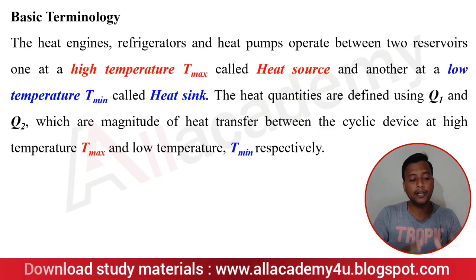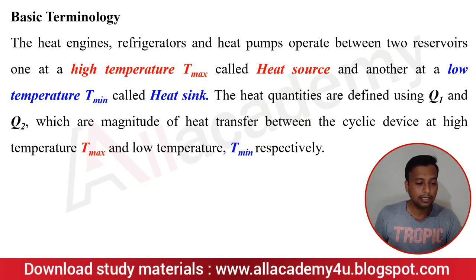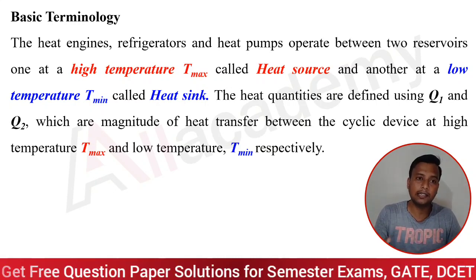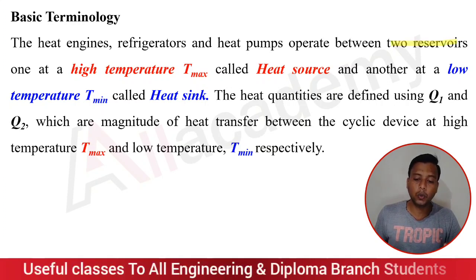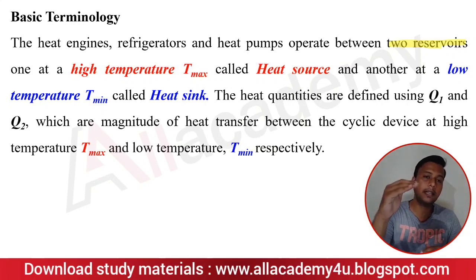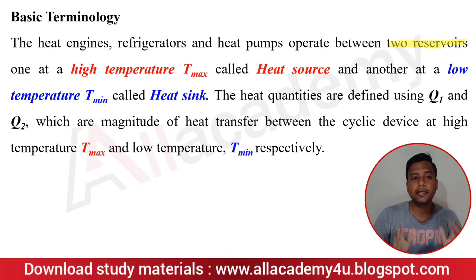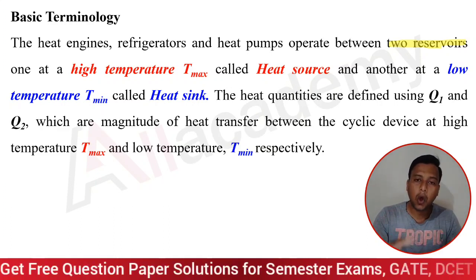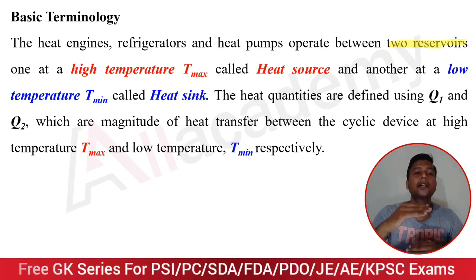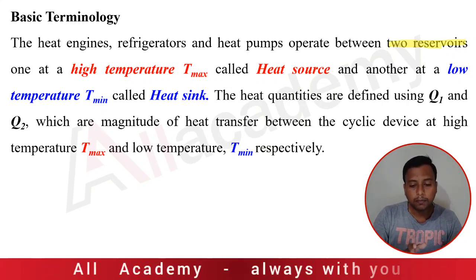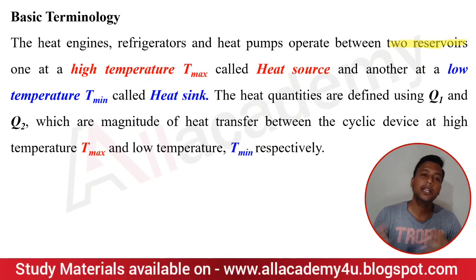The heat engine, refrigerator, and heat pumps all operate between two reservoirs. One is at a higher temperature — that is T_max — which is called the heat source. The heat source is the point where the maximum temperature is observed. The other reservoir is at a lower temperature — T_min — and is called the heat sink. Whatever heat is left over is sent back to this heat sink.